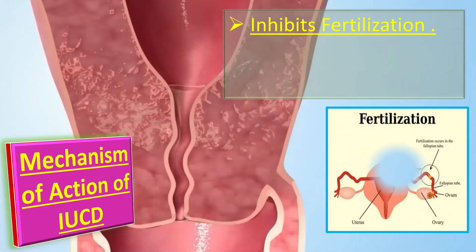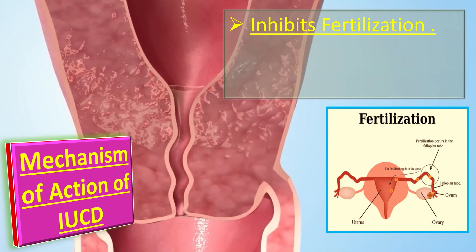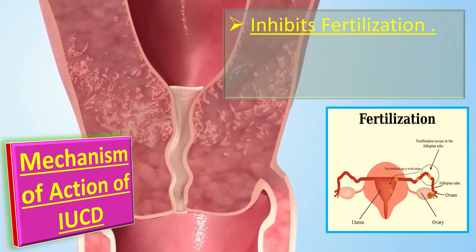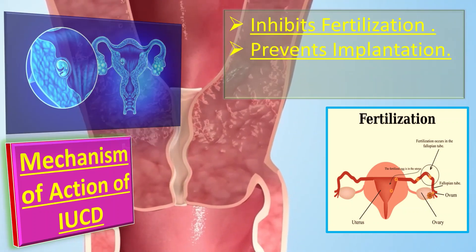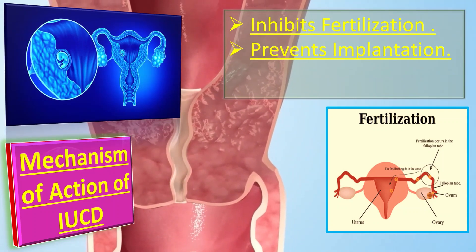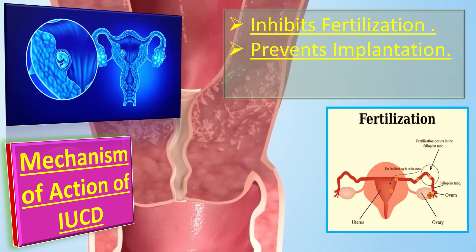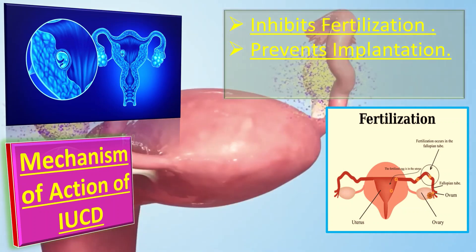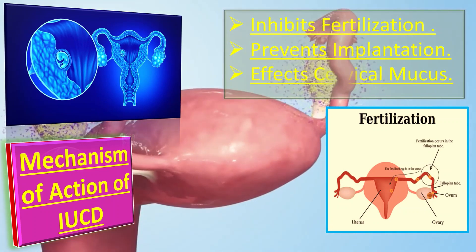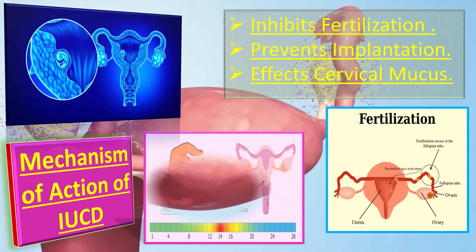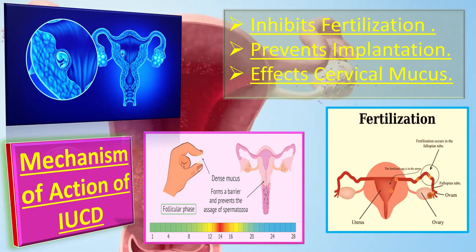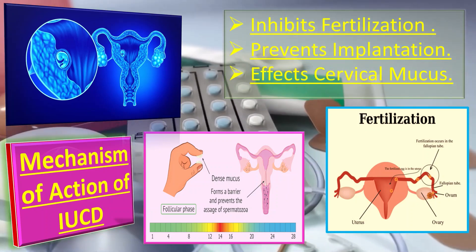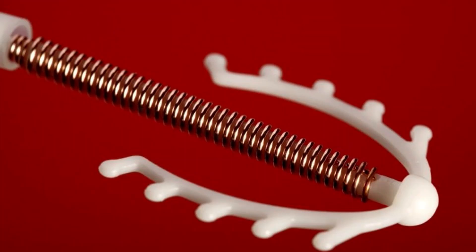The mechanism of action of IUCD: it works by inhibiting fertilization through direct toxicity and an inflammatory reaction within the endometrium. It can also have an anti-implantation effect. Copper is toxic to the ovum and the sperm, and the copper content of cervical mucus inhibits sperm penetration as well.